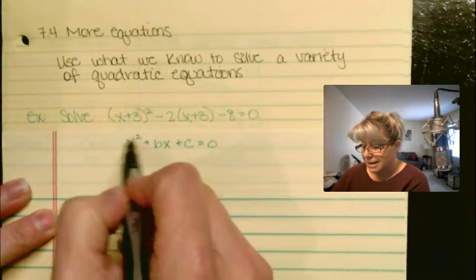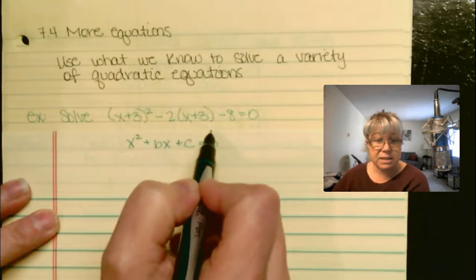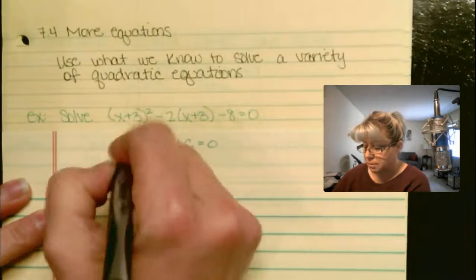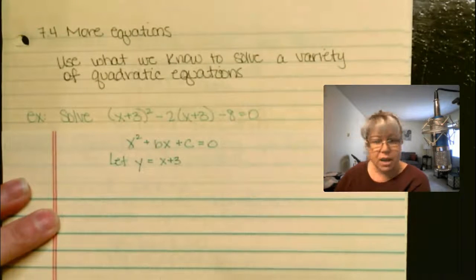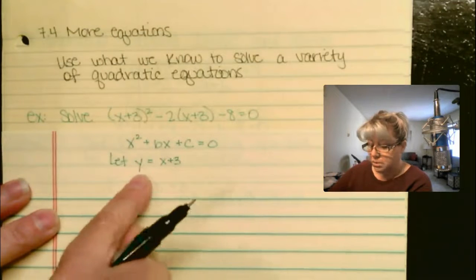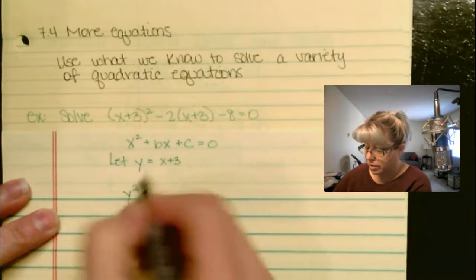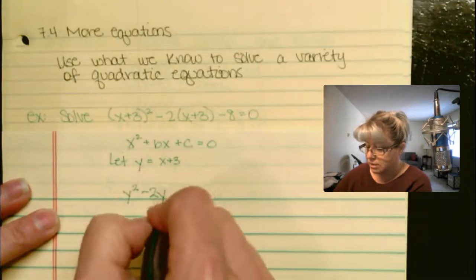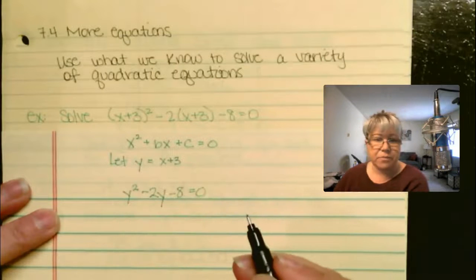This x-looking thing looks like x plus 3. So why not simplify this problem by letting y equal x plus 3, and we'll substitute in wherever we see an x plus 3, we'll substitute in y. So x plus 3 squared becomes y squared. Minus 2 times x plus 3 — well, x plus 3 is y, so let's substitute in y. Minus 8 equals 0.